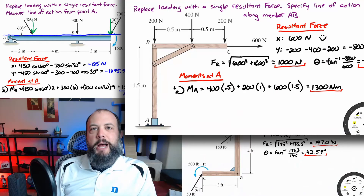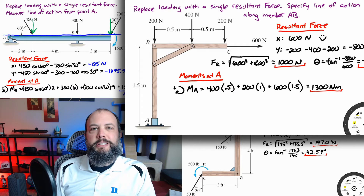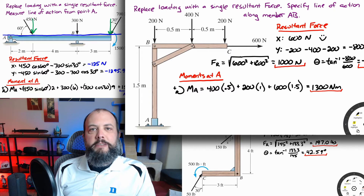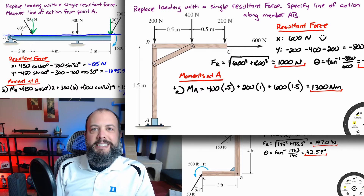The most common mistake I'd expect on this part of the problem is with the distance for the 600 Newton horizontal force. Since it intersects the beam at the same point as the 200 Newton force, there's a tendency to accidentally use the same distance of 1 for both. Remember: when doing a scalar moment as force times distance, the force and distance should be perpendicular to each other. So the vertical force uses a horizontal distance, and the horizontal force uses a vertical distance.